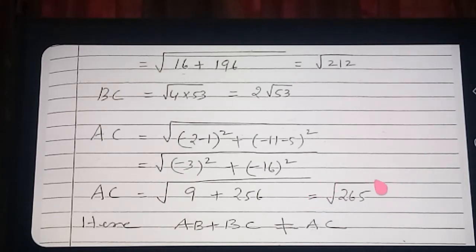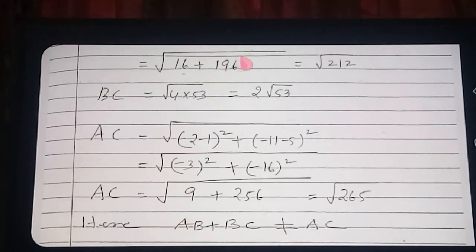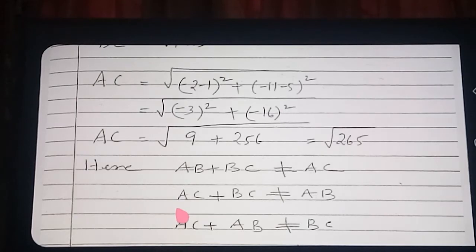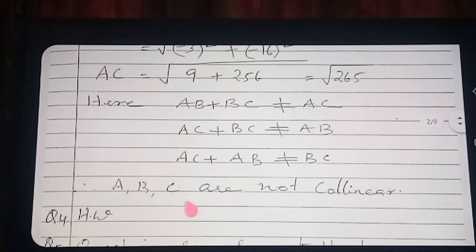Now very clearly you can say: any two line segments added never give the third one. AB plus BC does not equal AC. AC plus BC does not equal AB, and AC plus AB does not equal BC. Therefore we can say the points are not collinear.